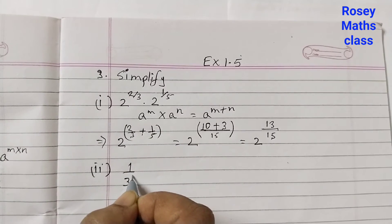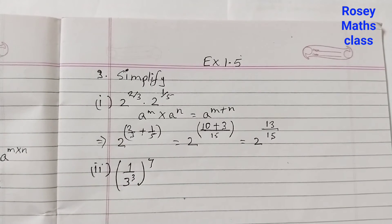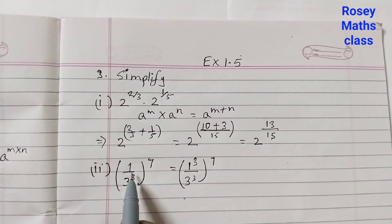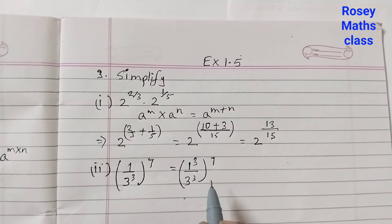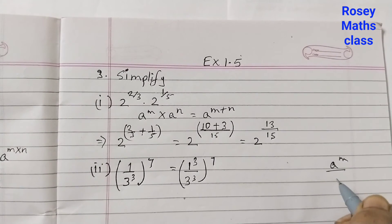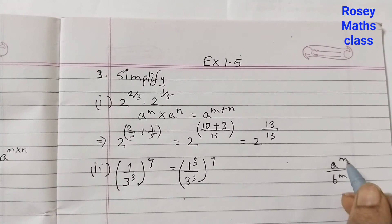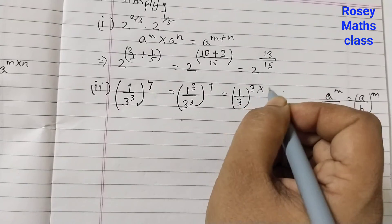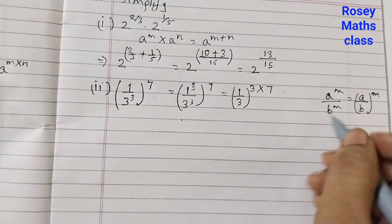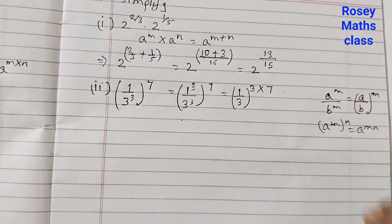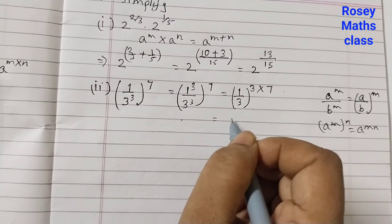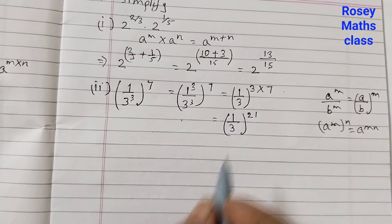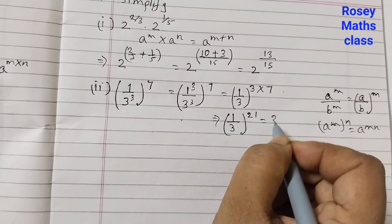Second part: (1/3)^3 to the power of 7. We can write this as (1^3)/(3^3) to the power of 7, since 1 × 1 × 1 = 1. The law we use is a^m / b^m = (a/b)^m. So this becomes (1/3)^(3×7) = (1/3)^21, which can also be written as 3^(−21).